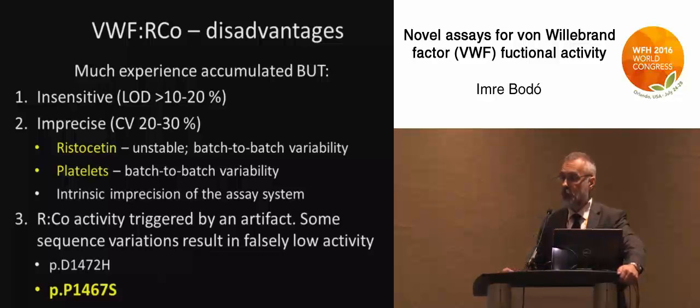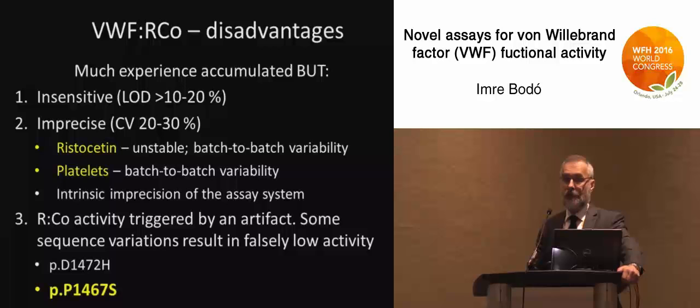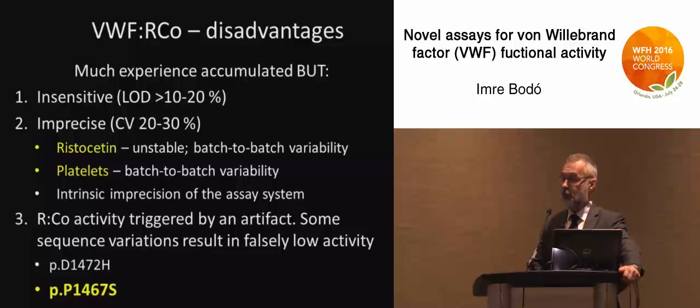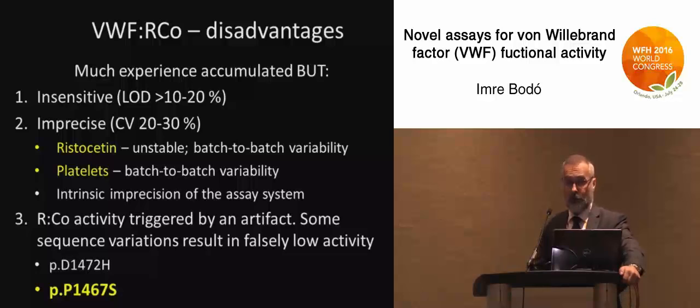The ristocetin cofactor assay suffers from a number of disadvantages. It's very insensitive — the limit of detection is sometimes as high as 20% and never goes below 10%. That means in patients who have low levels, where we need this information the most, it is not available. It is also very imprecise; the coefficient of variation goes up to 30%, meaning that if we repeated the test enough times in anybody, we could find low levels suggesting von Willebrand disease, which is obviously false.